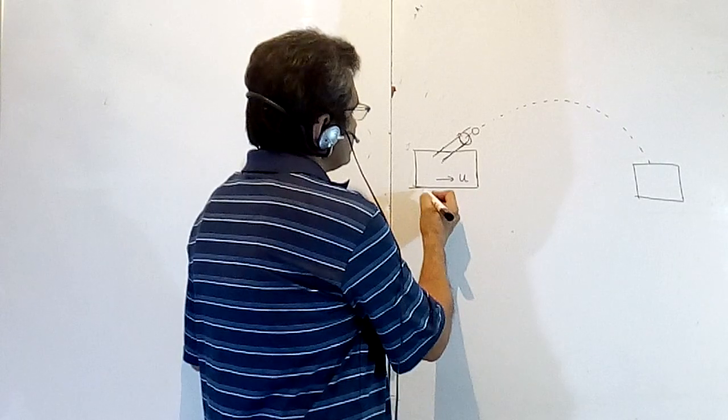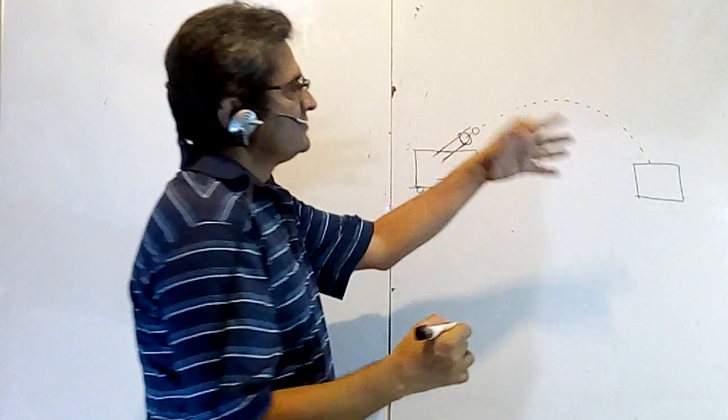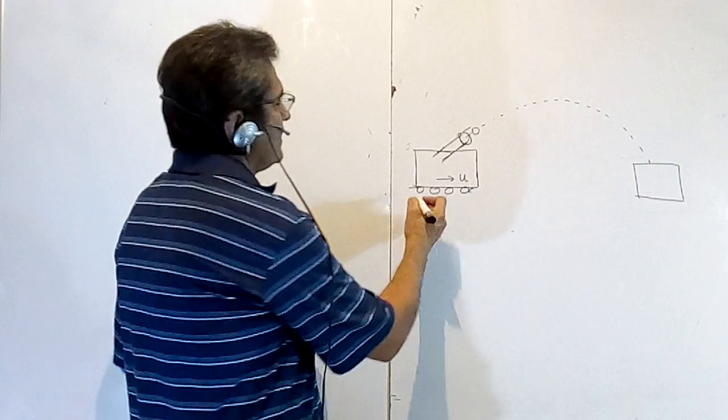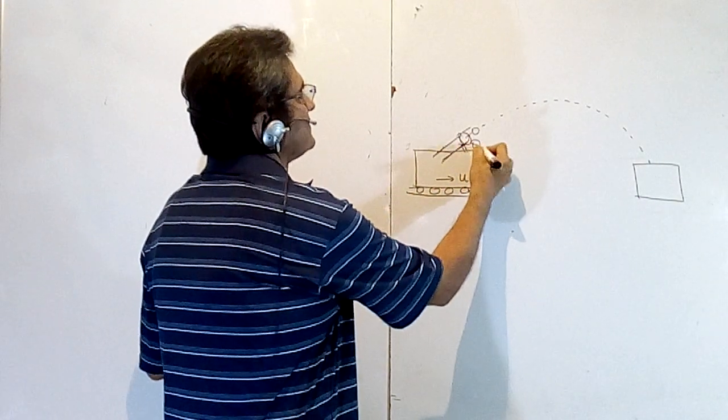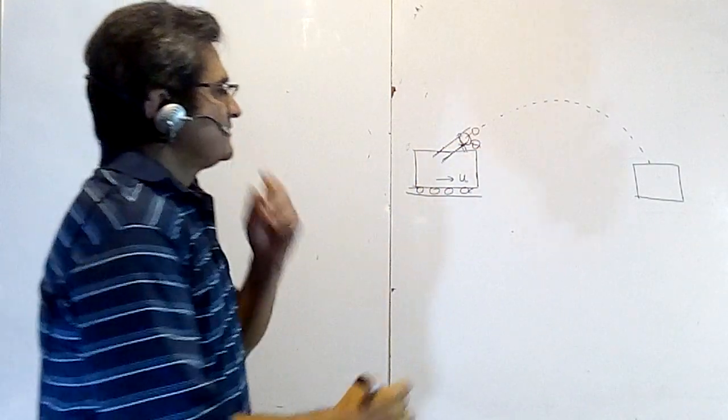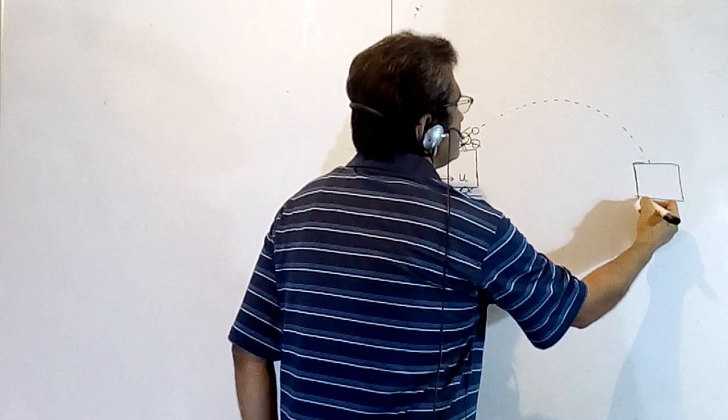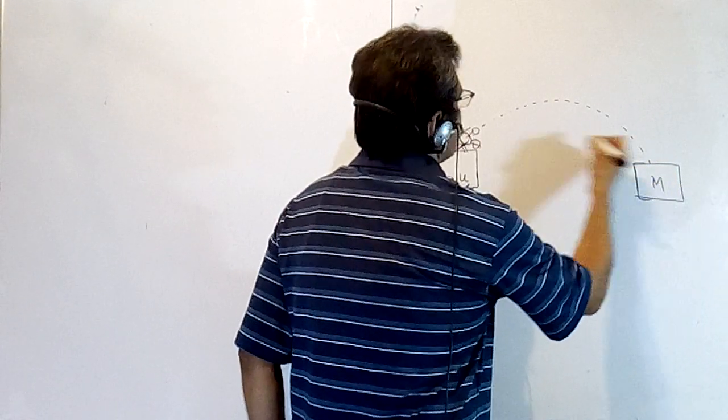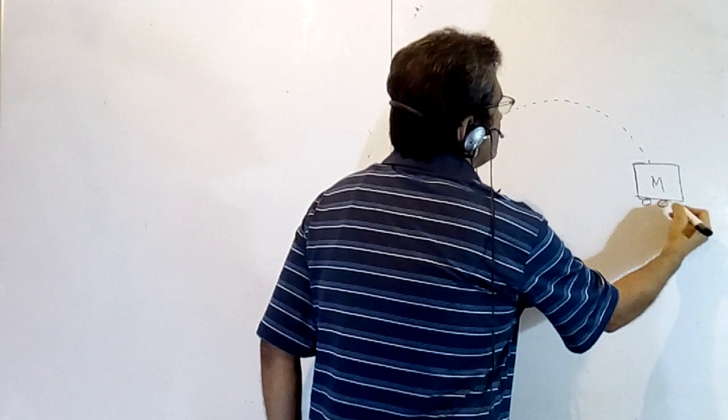Suppose I am given a situation: this is a cart from where I can launch this cannon, and this cart itself is moving with velocity u. There is some angle theta, and it is said that it fires the cannon and hits this body. It has some mass m, the cannon has mass m, this body is also on wheels.